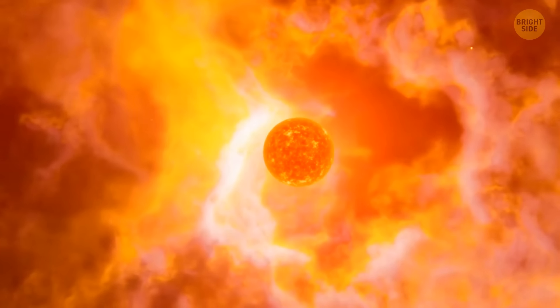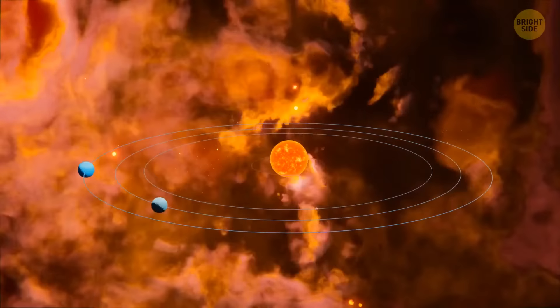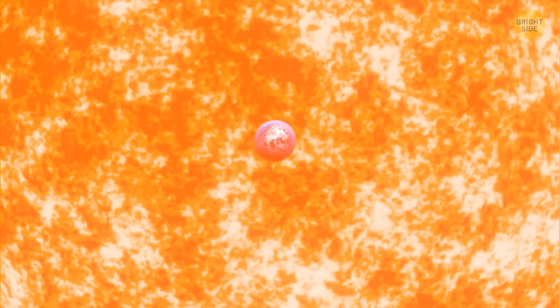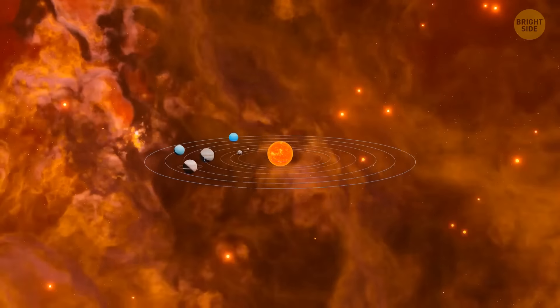But not everything in this molecular cloud has turned into the Sun. The remaining materials began to revolve around the new star. And, as you might have guessed, they gradually turned into planets, including our Earth. This is how our solar system was created.